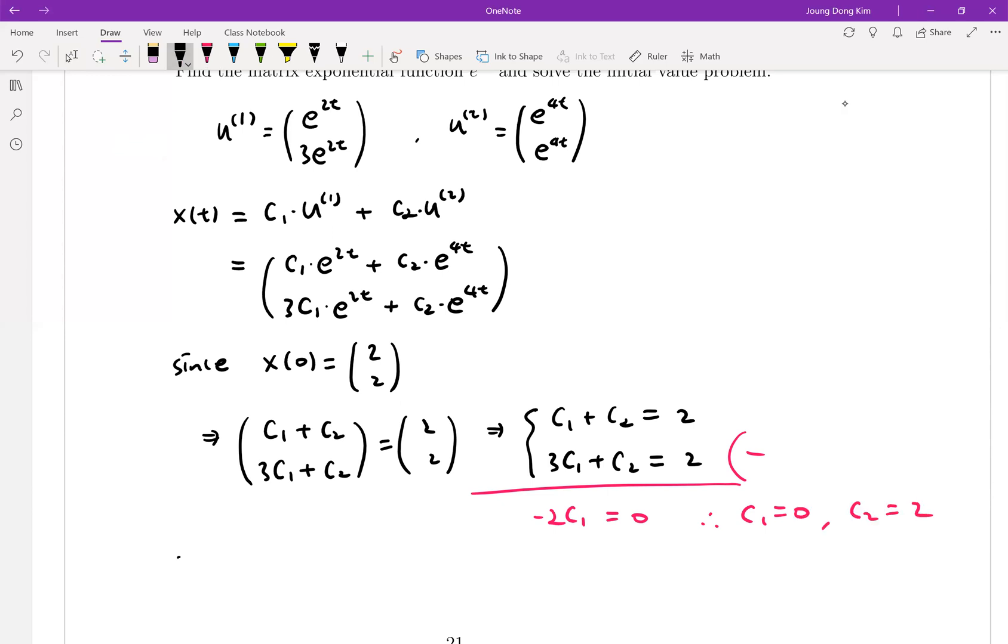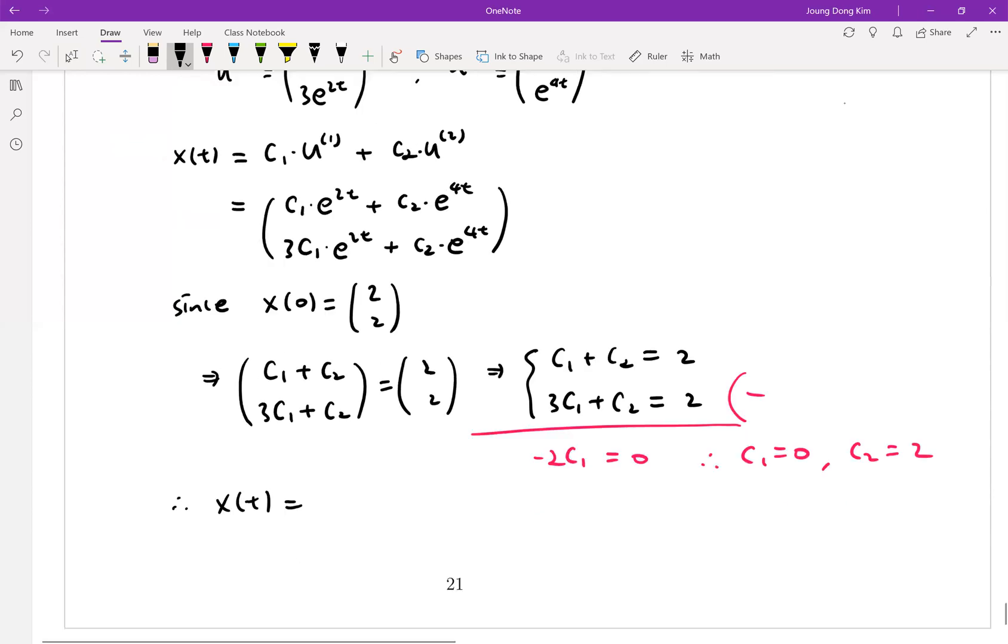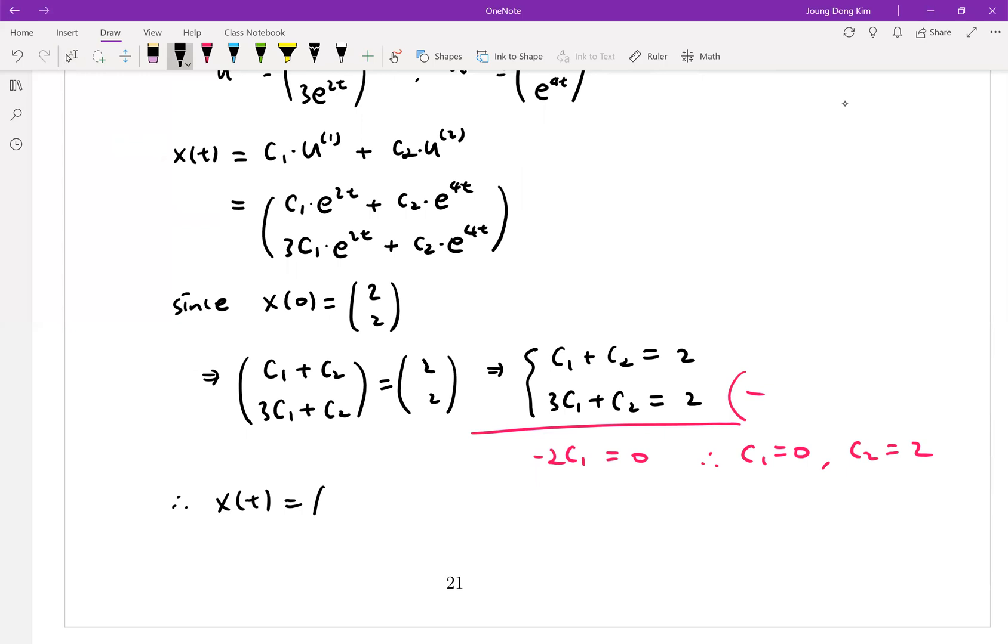So your solution vector function is (2e^(4t), 2e^(4t)). That's it.